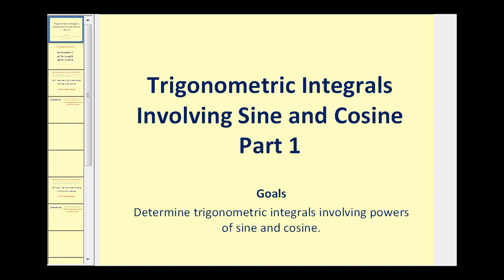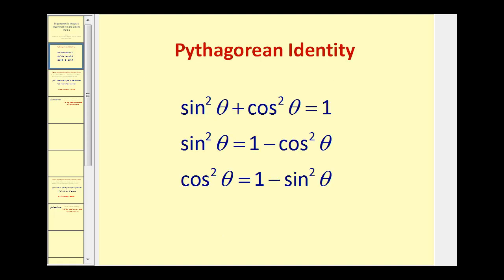Welcome to a video on trigonometric integrals involving sine and cosine, part one. The goal is to determine trigonometric integrals involving powers of sine and cosine. We're going to be utilizing this Pythagorean identity to change the form of the integrand so that we can use u-substitution to evaluate the integral. Notice that this is the same Pythagorean identity — here it's solved for sine and here it's solved for cosine.